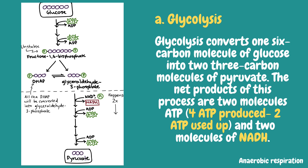The 3-carbon sugars formed when the unstable sugar breaks down are different from each other. Only one glyceraldehyde-3-phosphate can enter the next step; however, the unfavorable sugar DHAP can be easily converted into the favorable one, so both finish the pathway in the end. In the energy-releasing phase, each 3-carbon sugar is converted into another 3-carbon molecule called pyruvate through a series of reactions, making two ATP and one NADH molecule. Because this phase takes place twice, it makes 4 ATP and 2 NADH overall.